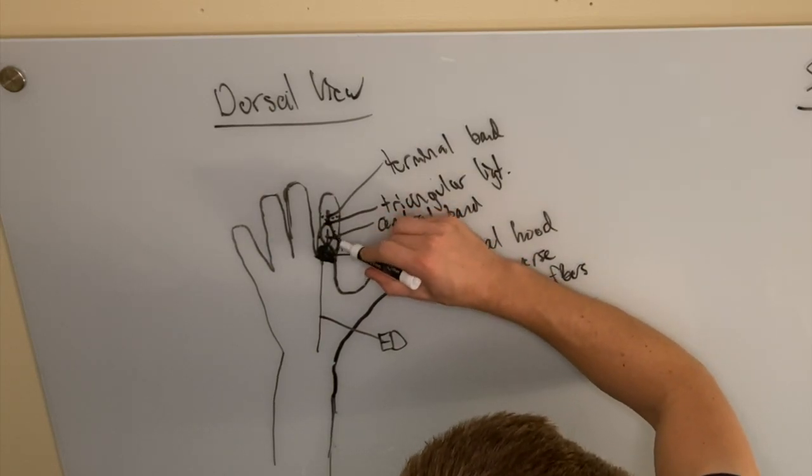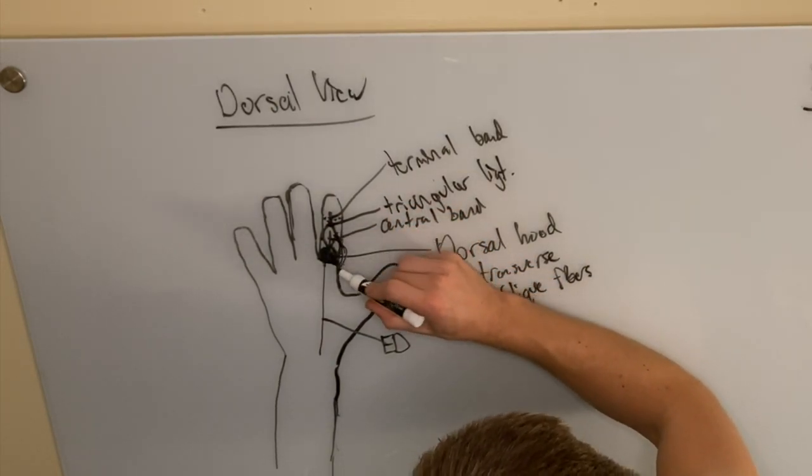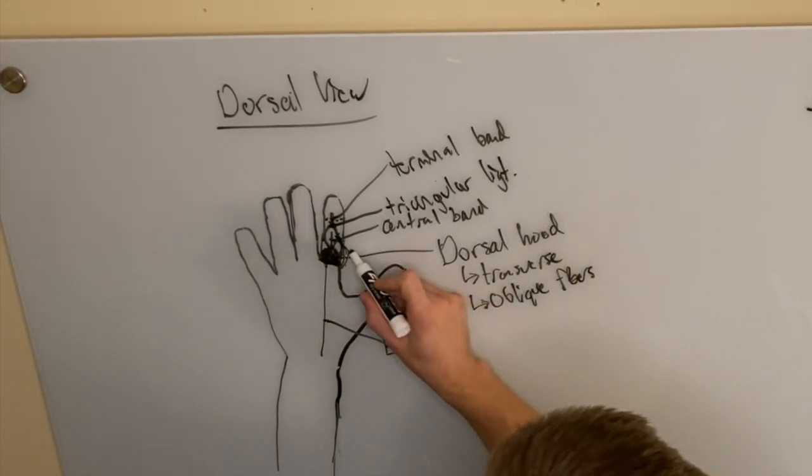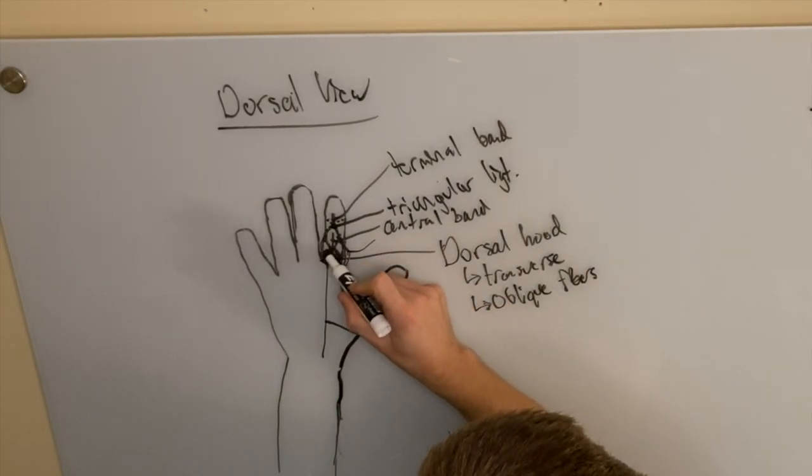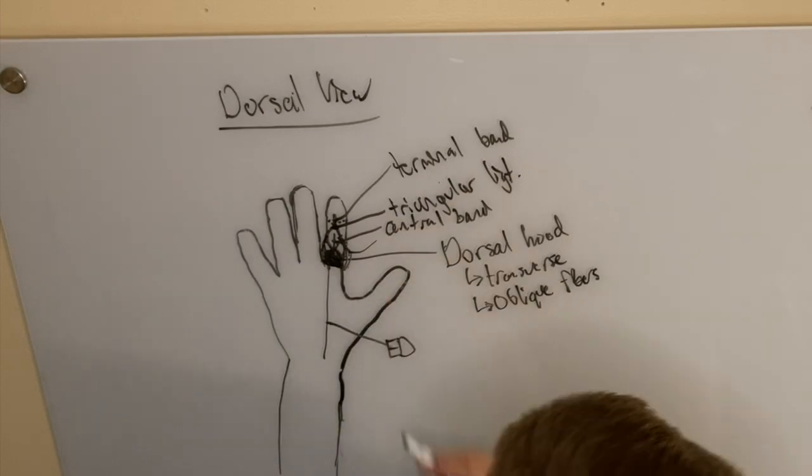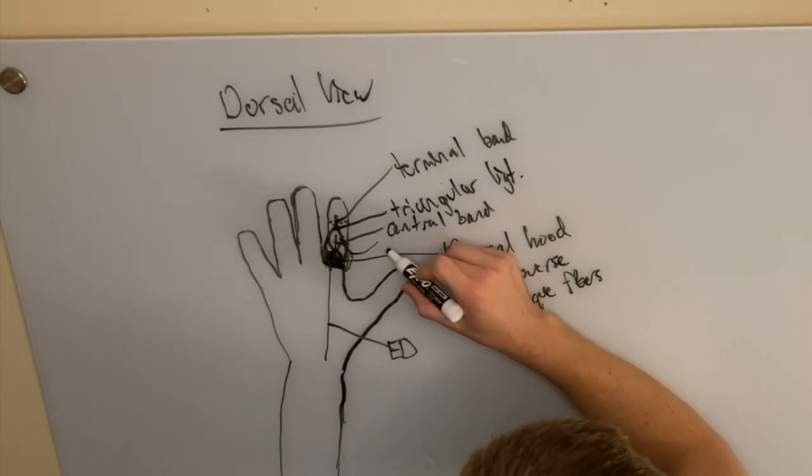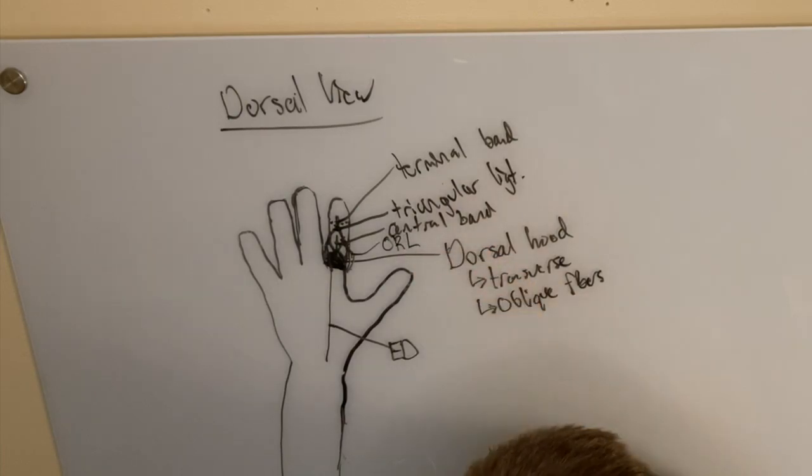Coming off of here and wrapping around the other side is the oblique retinacular ligament. And that's on both sides. You'll be able to see that better when we get over here. So that's the oblique retinacular ligament.